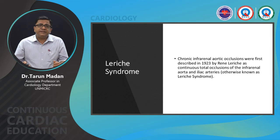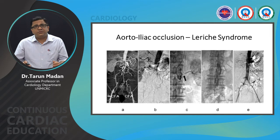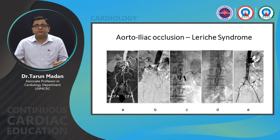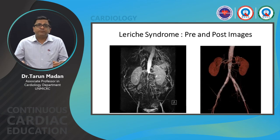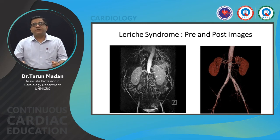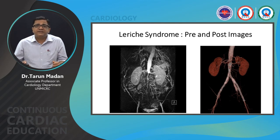Leriche syndrome is chronic infrarenal aortic occlusion, first described in 1923 by René Leriche, involving total occlusion of the infrarenal aorta and iliac arteries. A catheter is passed to thrombolyze the thrombus, and the residual lesion is stented. One case showed chronic aortic occlusion restored to excellent perfusion. Another case of juxtarenal aortic occlusion extending to both external iliac arteries was treated with three stents — one in the abdominal aorta and two in the iliac arteries.